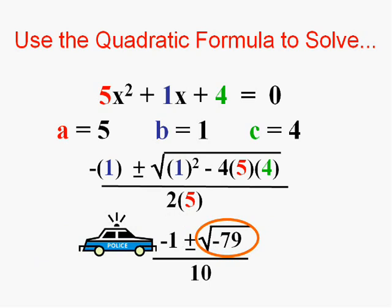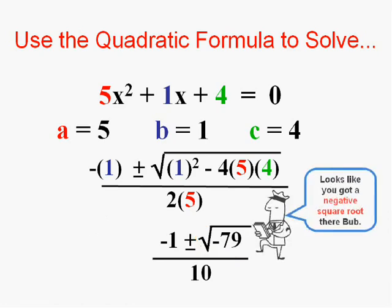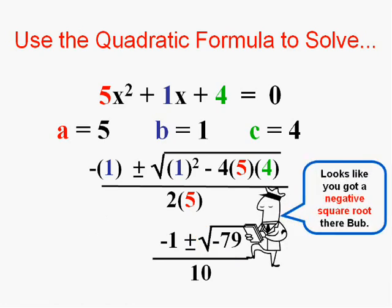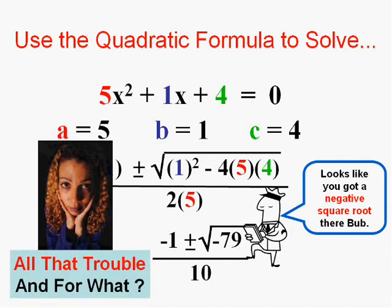But we know we can't have a negative square root. So in real life this answer or these answers would be of no use to us because this is a complex imaginary number. And we went to a lot of work to find that. So one has to ask oneself, why would I go to all that trouble for that?